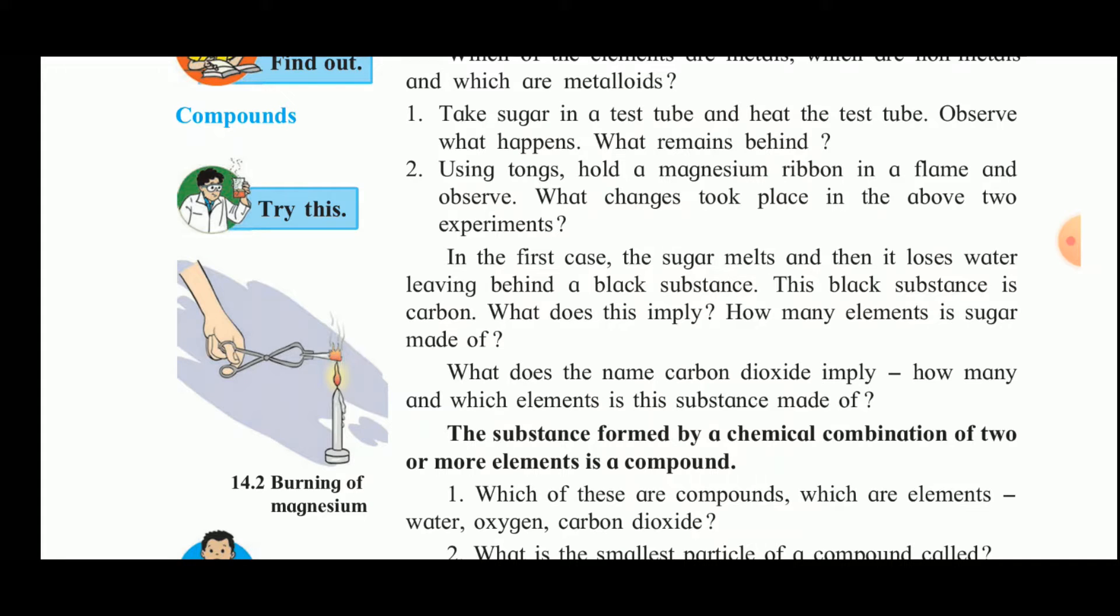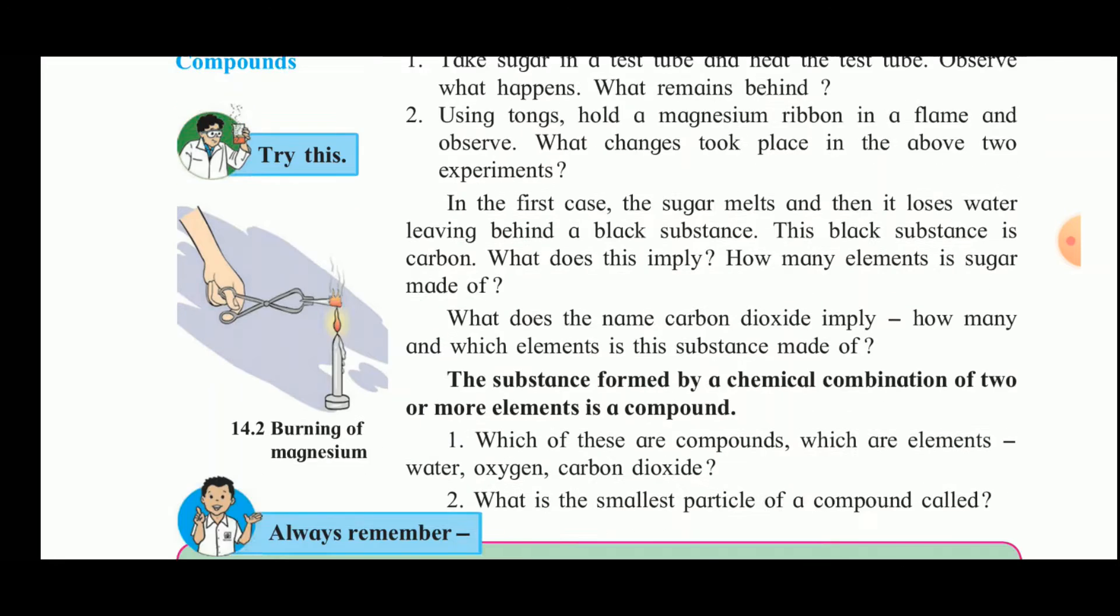What does the name carbon dioxide imply? How many and which elements is this substance made of? Carbon dioxide is a compound made up of carbon and oxygen. One molecule of carbon dioxide contains one atom of carbon and two atoms of oxygen. The substances formed by chemical combination of two or more elements is a compound.